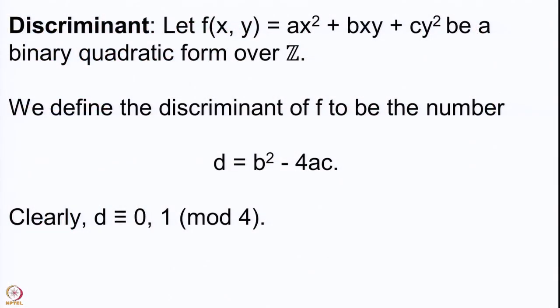Welcome back. We are studying integral binary quadratic forms and we introduced some transformations which are essentially change of variables. We also introduced the concept of discriminant of a quadratic form. The definition is here in the slide: if your form is ax² + bxy + cy², then the discriminant is b² - 4ac. We also noticed that since b² is always 0 or 1 modulo 4, the discriminant is always congruent to 0 or 1 modulo 4.